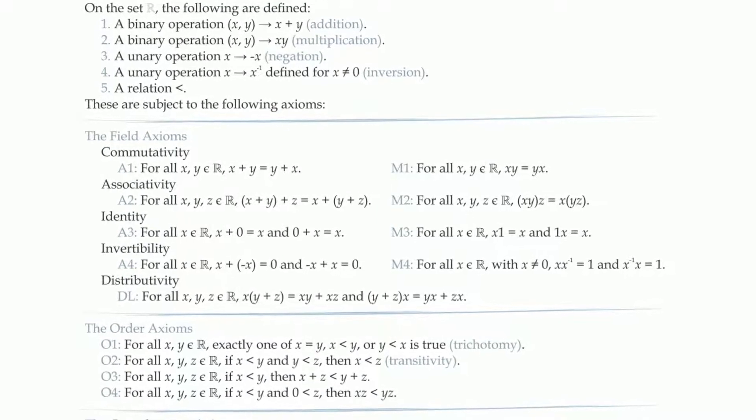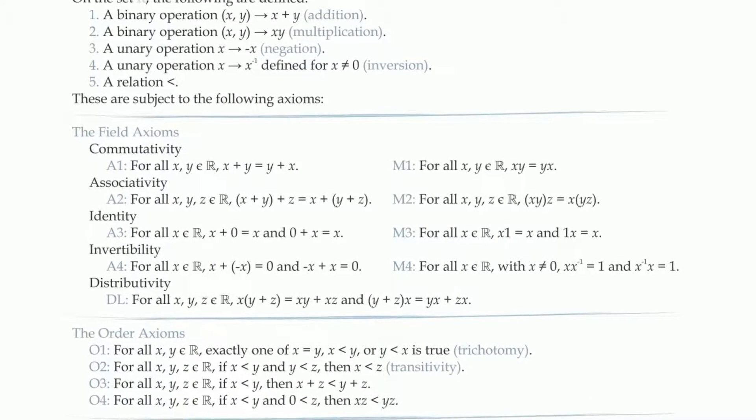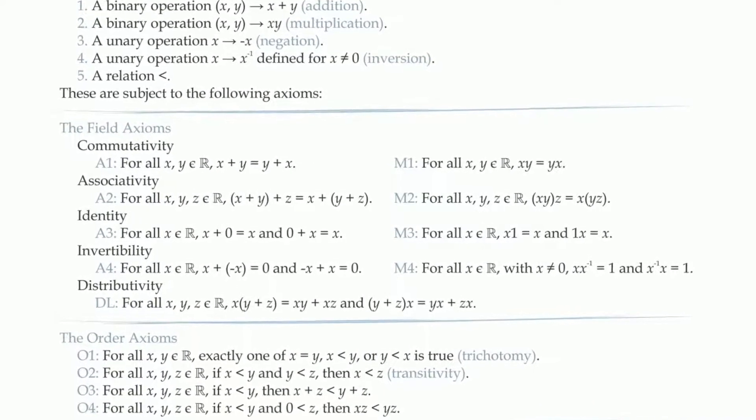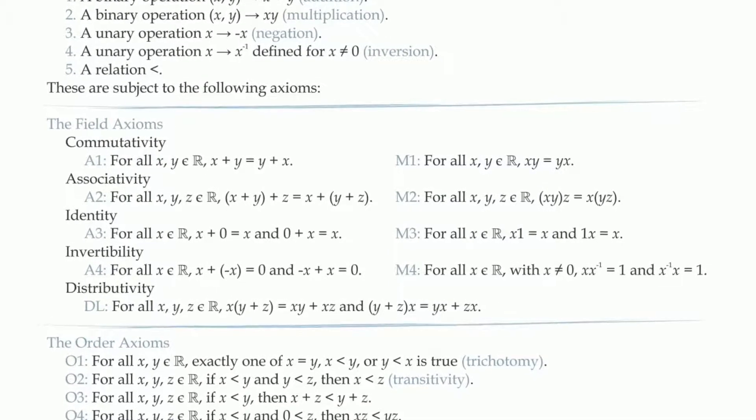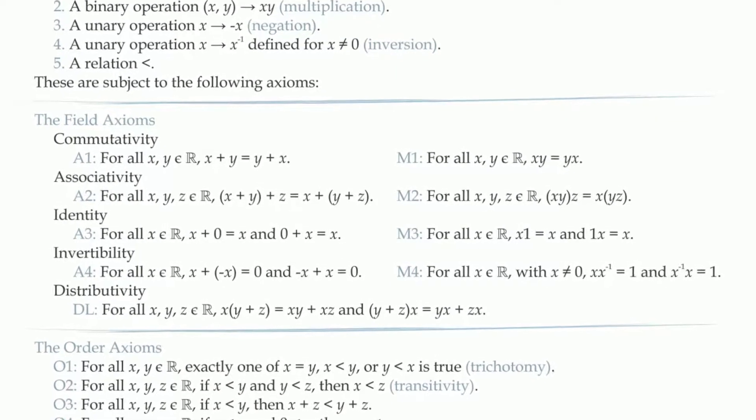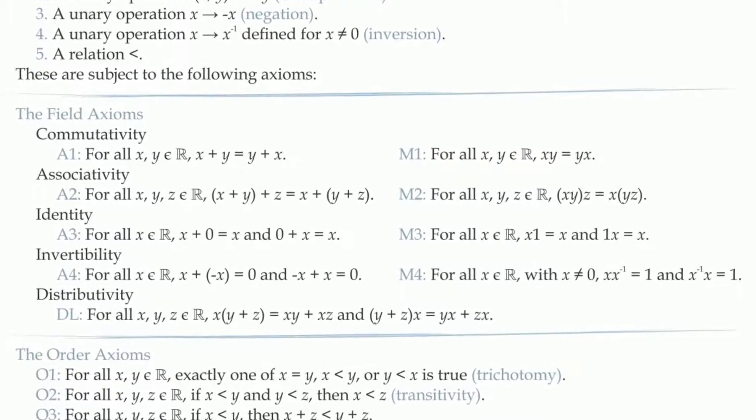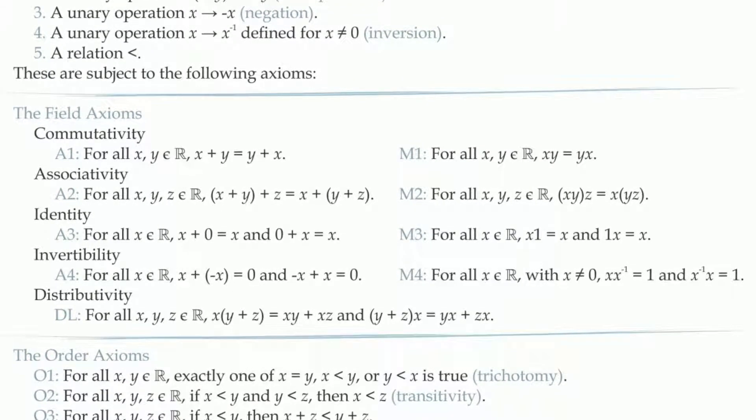However, not every mathematical system that obeys these axioms is a system of numbers. For example, the set of rational functions also obeys these axioms, but rational functions can't really be called numbers. And so today we just call these things fields.